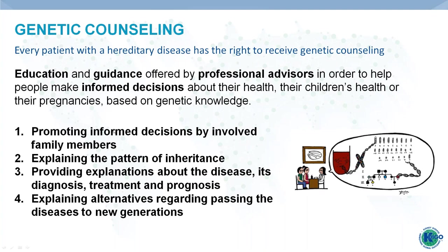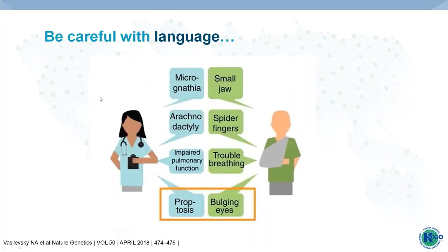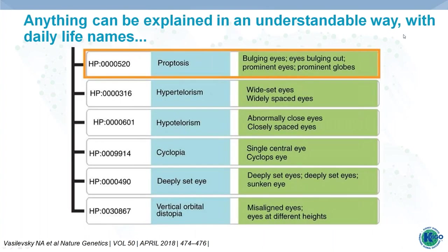The genetic counsellor is expected to promote informed decisions by involved family members, explain the pattern of inheritance of the particular disease, provide explanations about the disease, its diagnosis and treatment, and explain alternatives regarding passing the disease to new generations. All this information is difficult even for health professionals, let alone for patients. Some tips include being careful with language—for example, using 'eyes bulging out' instead of the medical term 'proptosis.' There's always an easy way to explain a condition.